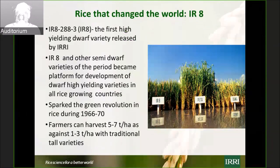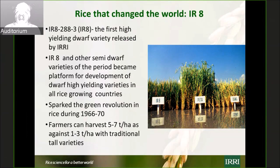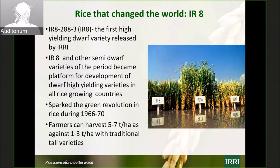As Dr. Gupta started with in his lecture — the dwarf varieties in wheat, then the dwarf varieties in rice — we know how the whole world has changed. We were predicted not to survive, yet we are well ahead of matching population growth with yield. Several varieties — IR8, TN1, Jaya in India — sparked the green revolution. Farmers can now harvest 5 to 7 tonnes per hectare in place of the 1 to 3 tonnes that was coming before. IR8 was replaced with IR36, and then IR64, which at one point was grown on 10 million hectares.